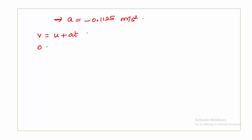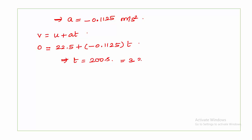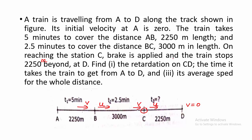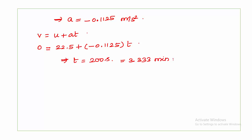To find the time taken for section CD, using V = U + at: final velocity at D is 0, initial velocity is 22.5 m/s, retardation is −0.1125 m/s². Solving for T gives 200 seconds, which converts to 3.333 minutes. This is T3, the time for section CD.